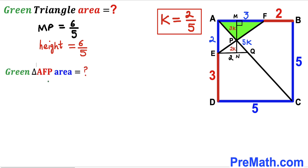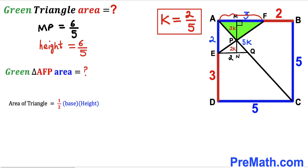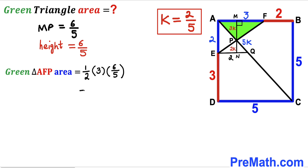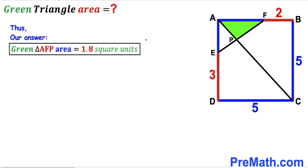Here's our final step. We are going to calculate the area of green shaded triangle AFP. Recalling that area equals one half times base times height, the base of this green triangle is 3 and the height is 6/5. So the area equals one half times 3 times 6/5, which simplifies to 9 divided by 5, or 1.8 square units. Thus the area of green shaded triangle AFP is 1.8 square units.